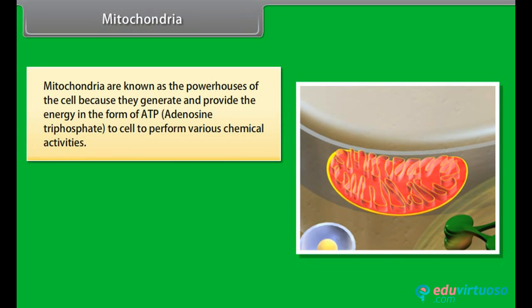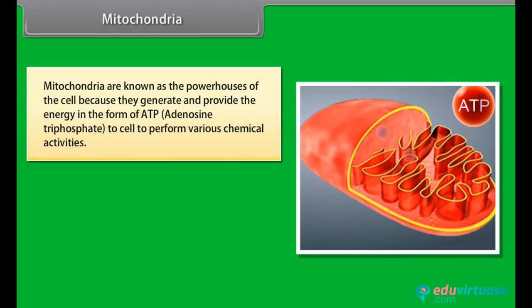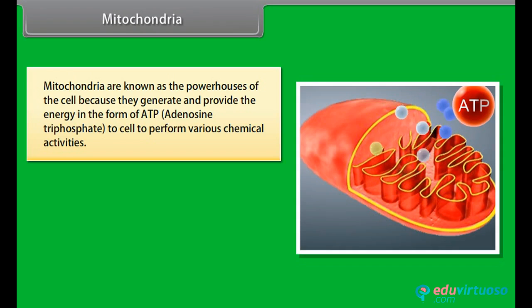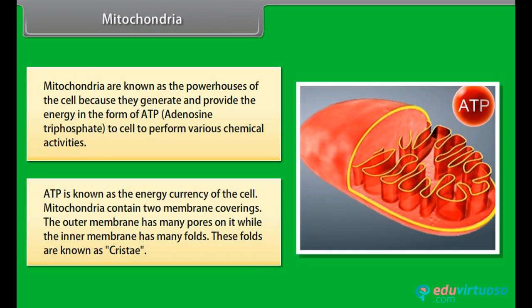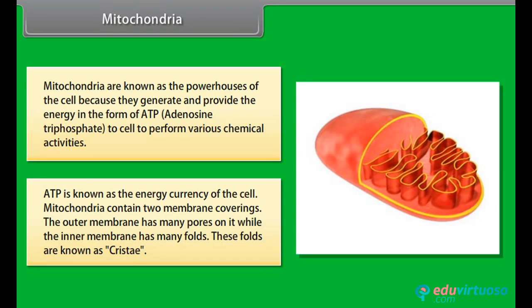Mitochondria are known as the powerhouses of the cell because they generate and provide energy in the form of ATP (adenosine triphosphate) to the cell to perform various chemical activities. ATP is known as the energy currency of the cell. Mitochondria contain two membrane coverings — the outer membrane has many pores, while the inner membrane has many folds. These folds are known as cristae.